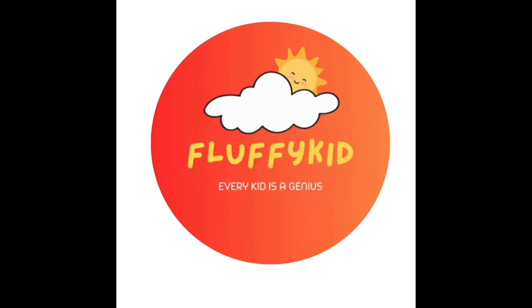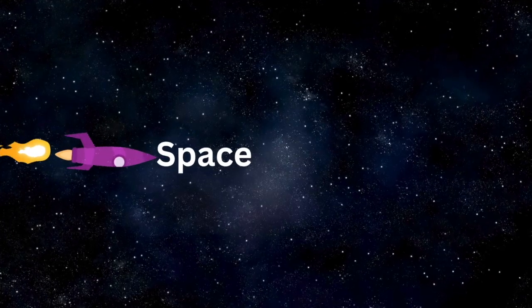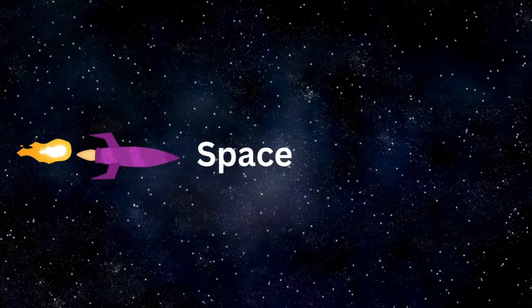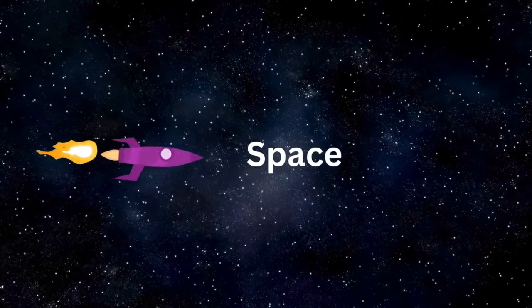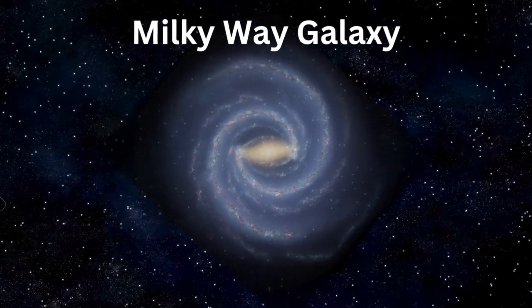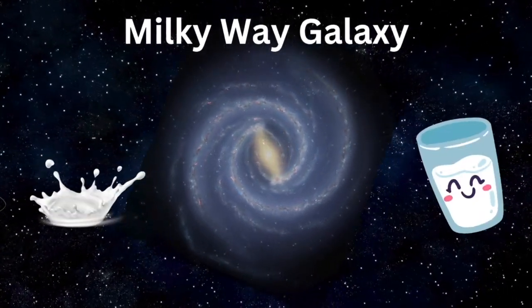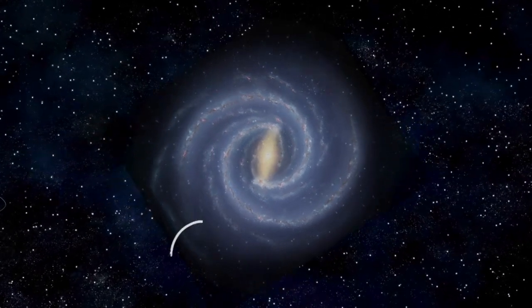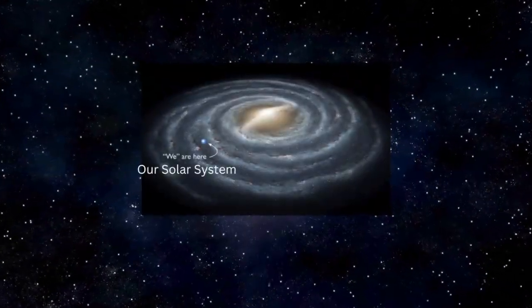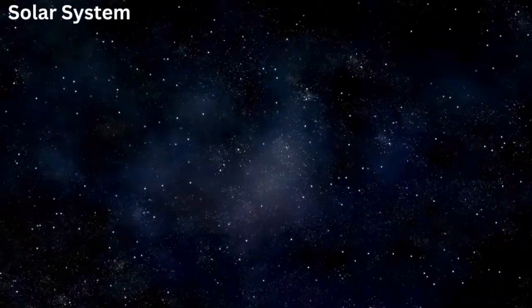Today in Fluffy Kid, let's have some fun learning about our solar system. For that, let's travel into outer space all the way to our Milky Way galaxy. It's called the Milky Way because it looks like patches of milk.